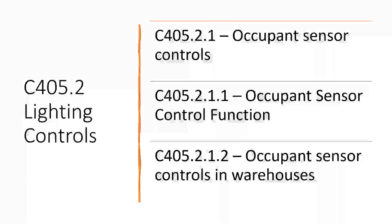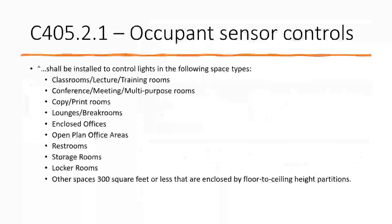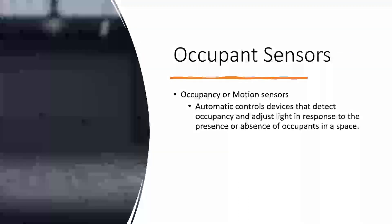Occupancy sensor controls are broken down into three sections: what is an occupancy sensor, the control functions, and special cases for warehouses and open office layouts. They shall be installed to control lights in the following space types — it's pretty straightforward and correlates with the space-by-space method. The main caveat is that 'other spaces' of 300 square feet or less that are enclosed by floor-to-ceiling height partitions are included — this is meant to encompass all the random rooms like mechanical, electrical, janitorial, storage, and laundry spaces.